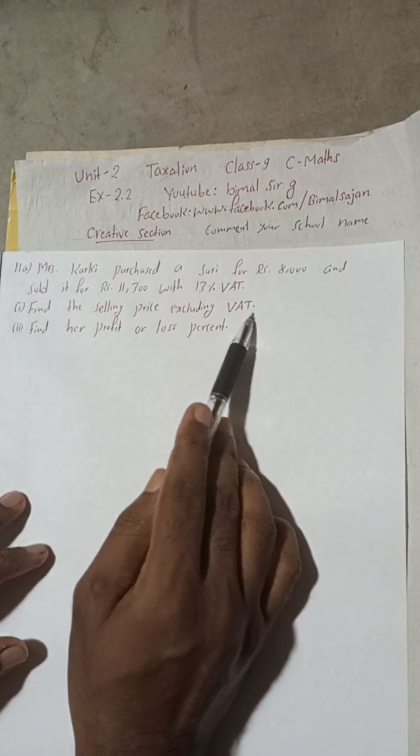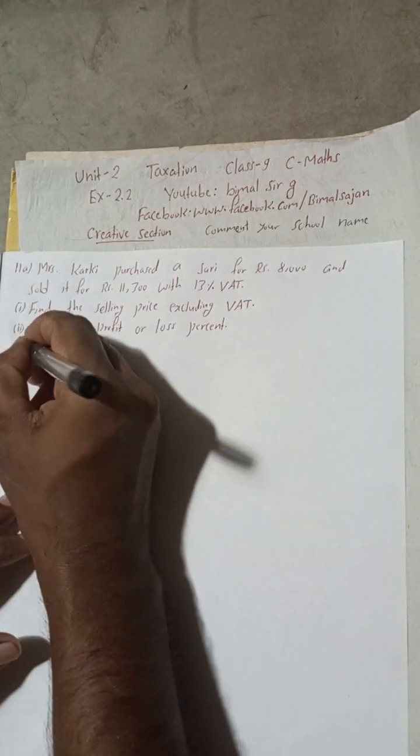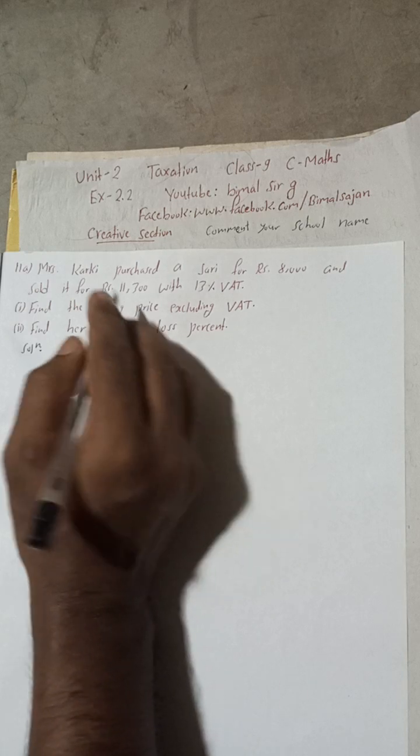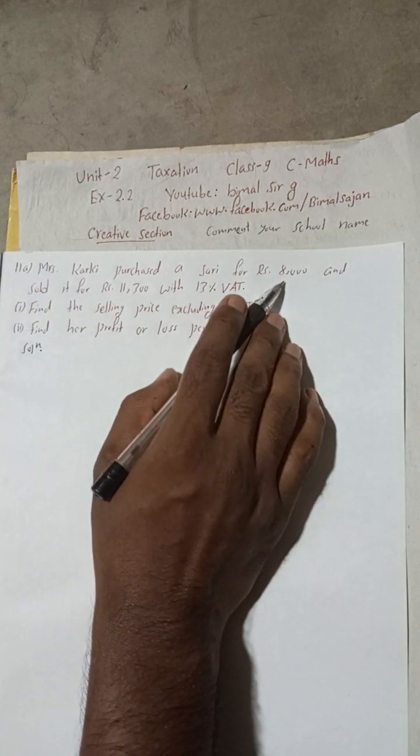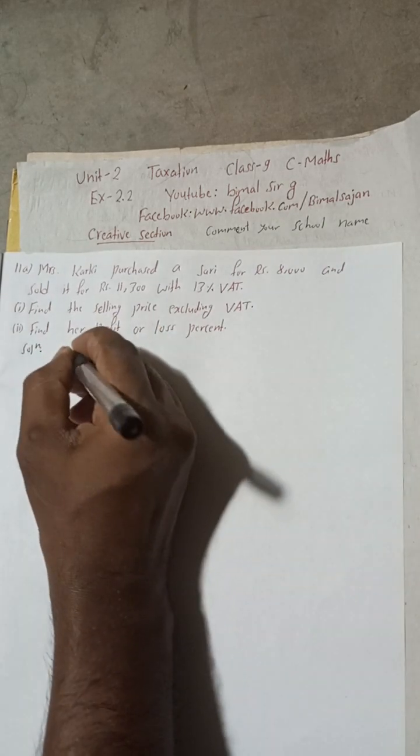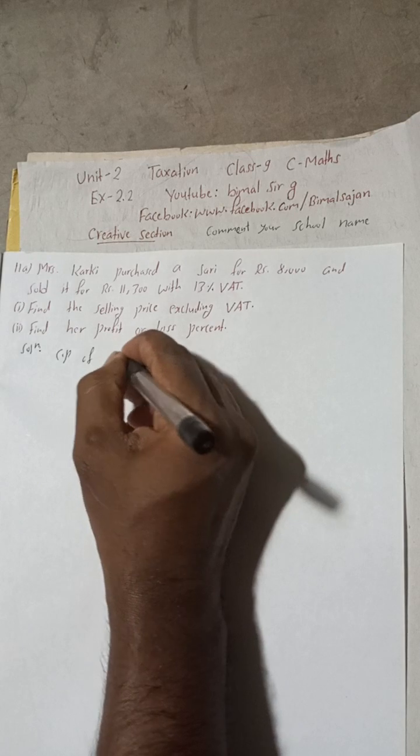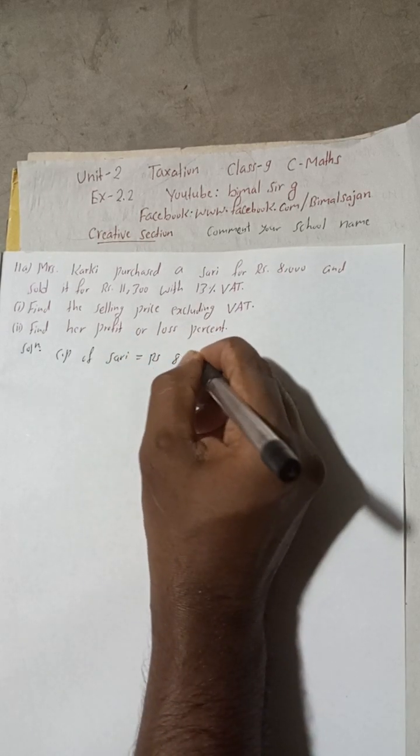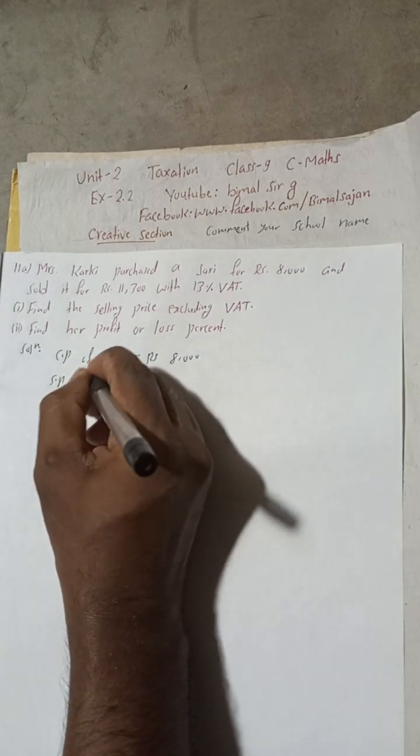Now let's begin the solution. So this is now 11a. Mrs. Karki purchased a sari. Purchase means this is the cost price of sari. This is the CP of sari.